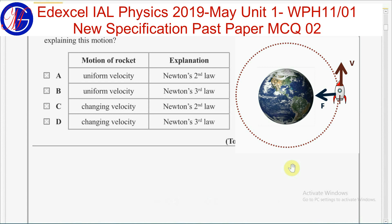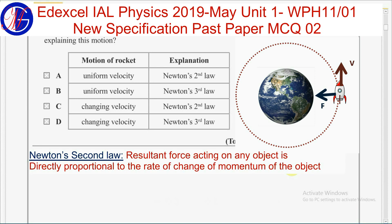In this situation, gravity — or the gravitational attractive force on the rocket by the Earth — acts as the resultant force. Looking at Newton's second law: the resultant force acting on any object is directly proportional to the rate of change of momentum of the object.